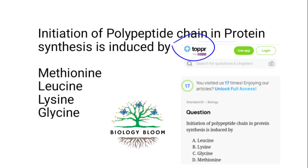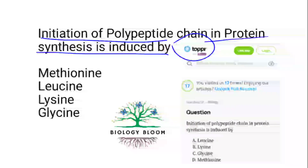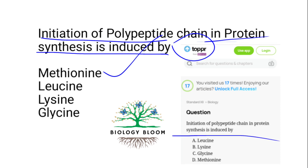Taken from Topper: initiation of polypeptide chain in protein synthesis is induced by methionine, which is also called the start codon — AUG. The same question, taken as it is: initiation of peptide chain in protein synthesis is induced by methionine.